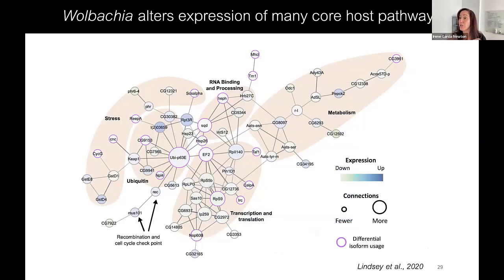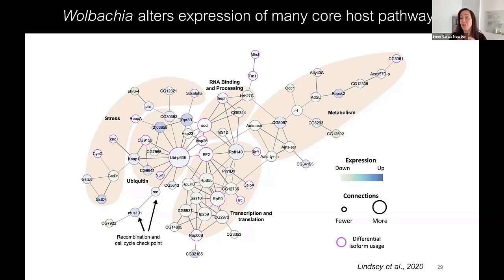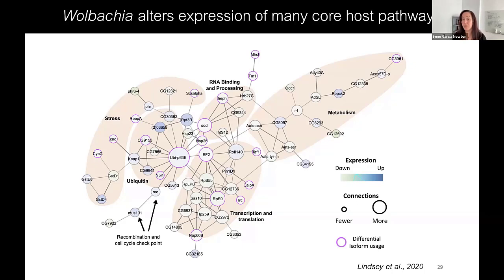How does Wolbachia alter the host cell environment? Every node in this network is a host gene differentially expressed in the presence of Wolbachia — darker blue for upregulated, yellow for downregulated. If a gene has known protein-protein or genetic interactions with other differentially expressed loci, a connection is drawn, and more connections means a larger node. Amelia also picked out differential isoform usage in the presence of Wolbachia — this symbiont not only altered gene expression but which isoforms were used, which is quite fascinating. She overlaid functional similarities on these hubs: genes involved in stress response, ubiquitin processes, recombination and cell cycle checkpoint, RNA binding and processing, transcription and translation, and metabolism.